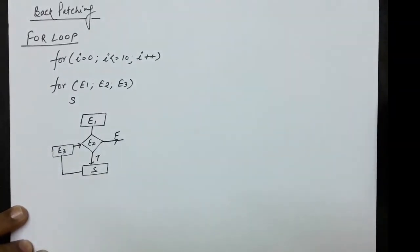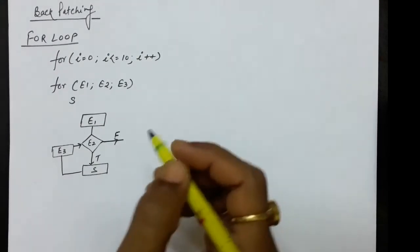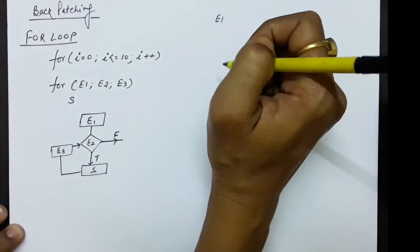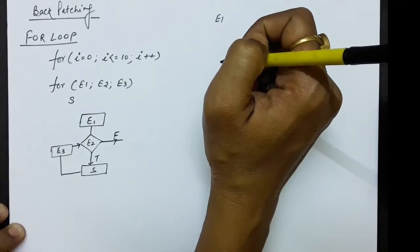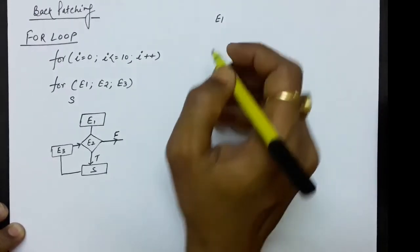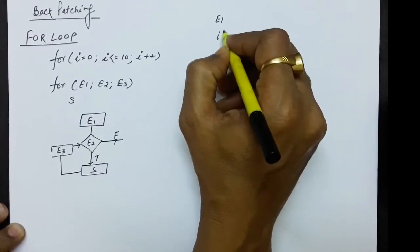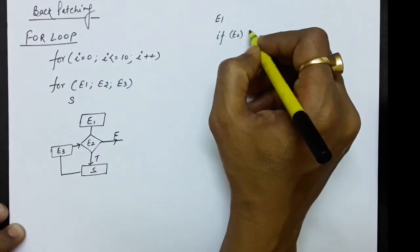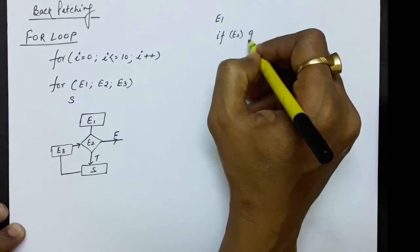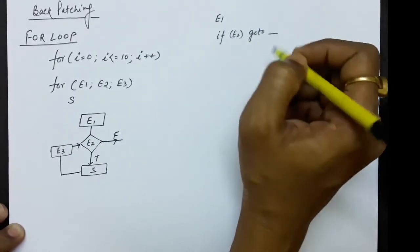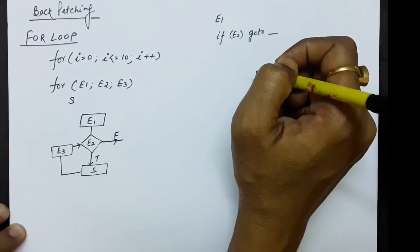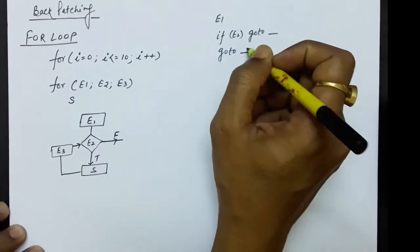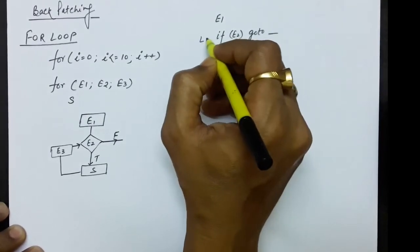Now how can three-address codes be written for this? First we do the initialization, so E1 is the first part. After E1, we need to check the condition. If E2 is true, we go to some level — that level is not known yet, we'll write it later using backpatching. If the condition is not true, we go to the last level. Let's say this last level is L1.